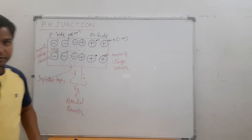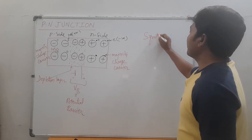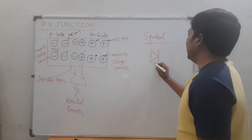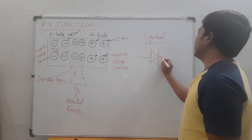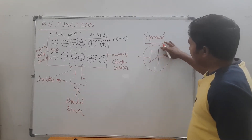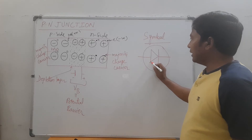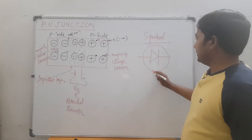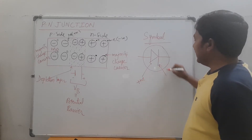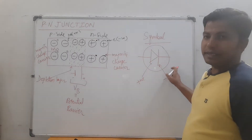Now, what will be the symbol of the PN junction? The symbol is a combination of a triangle and a vertical line. This triangle represents the positive side, and this vertical line represents the negative side. This is the symbol of the PN junction diode.